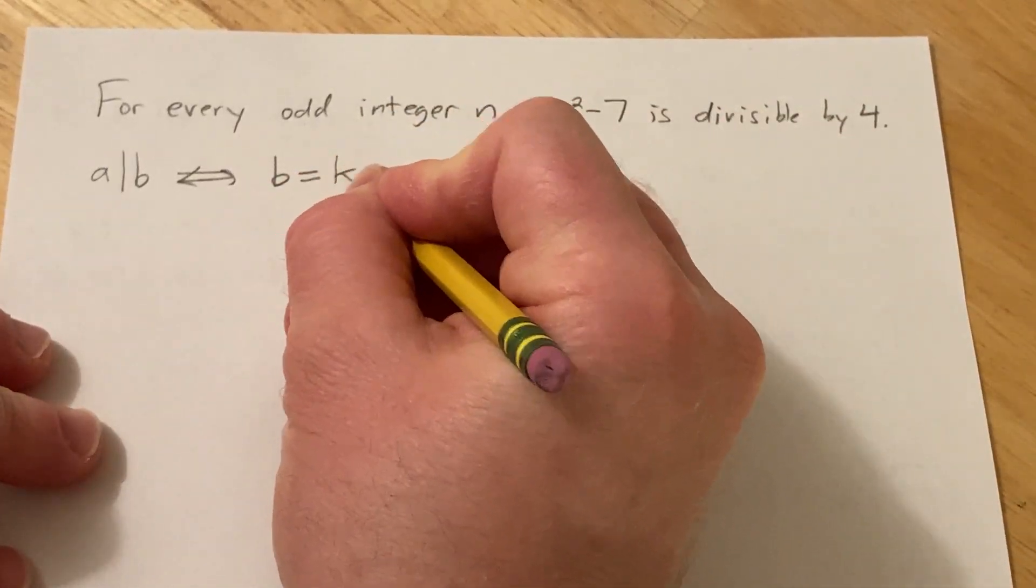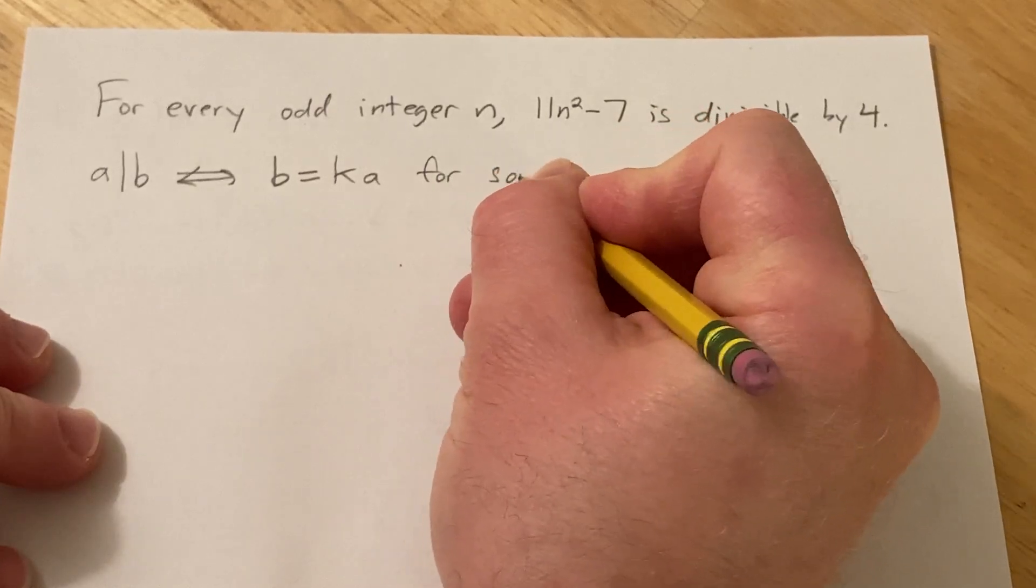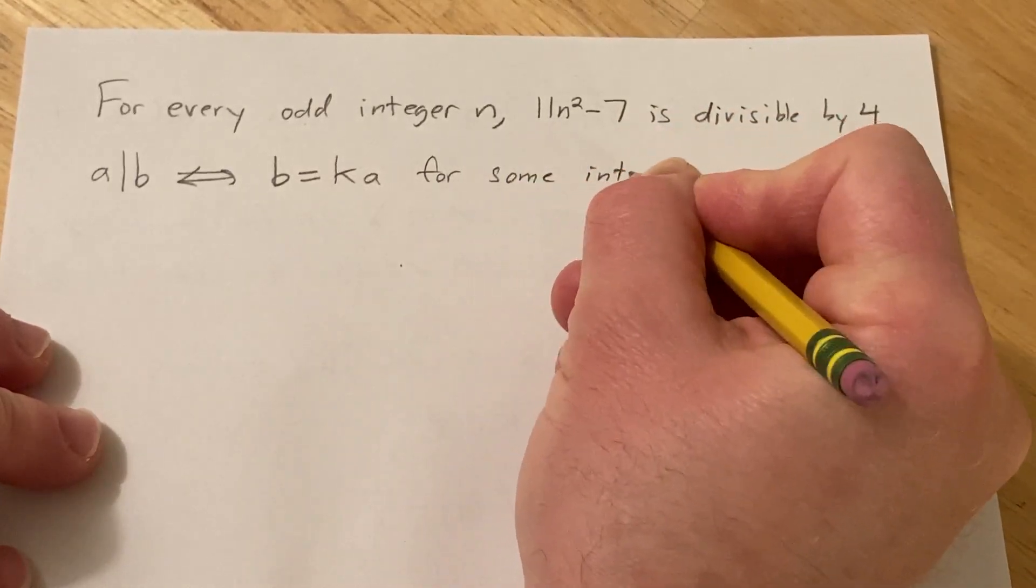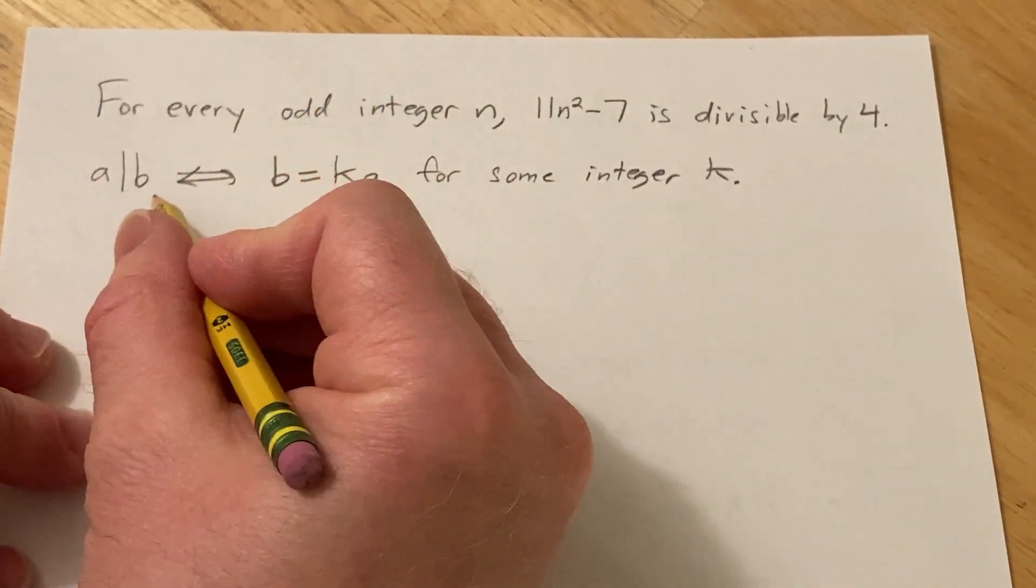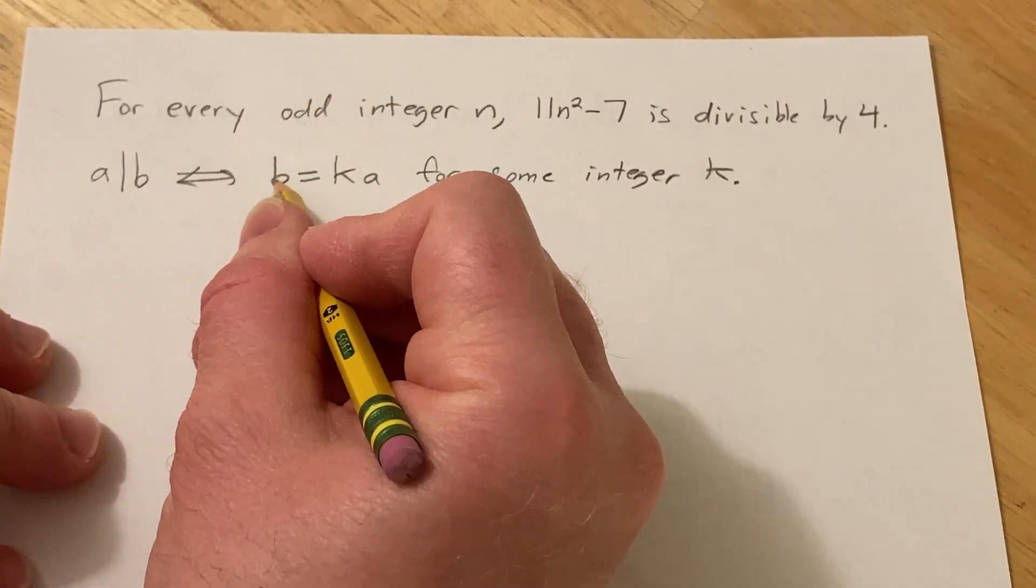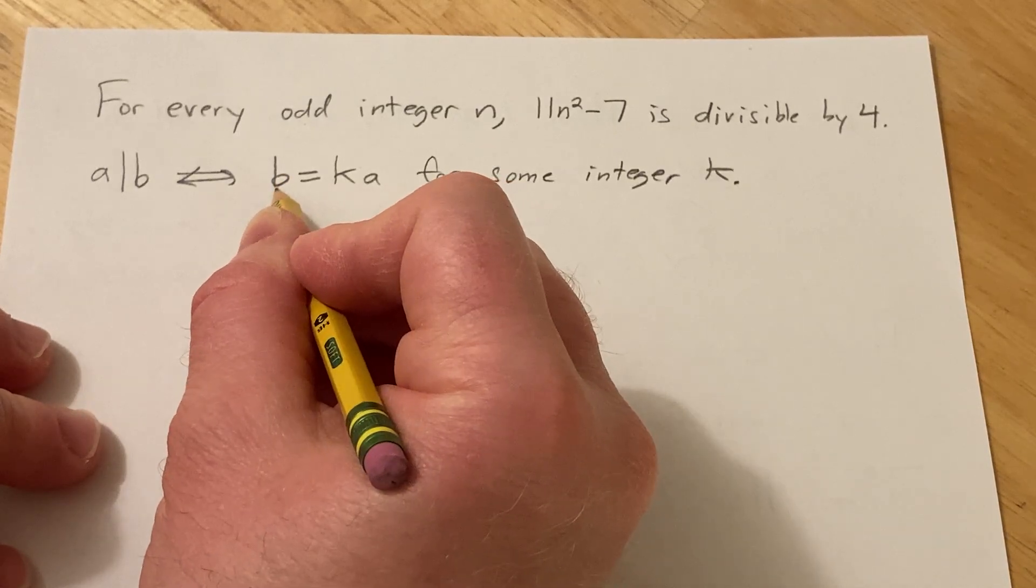So b is equal to k times a for some integer k. So in this case we would say that b is divisible by a.